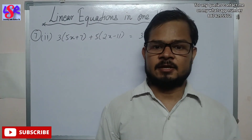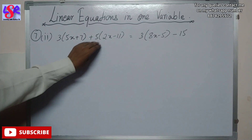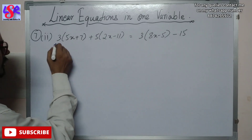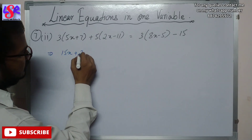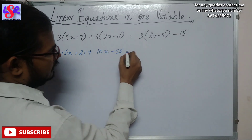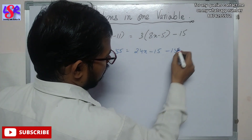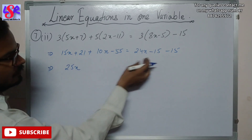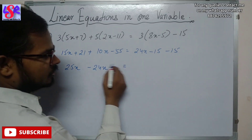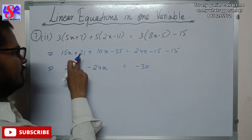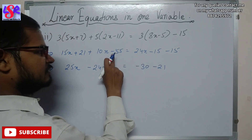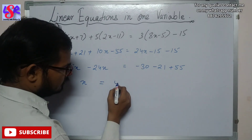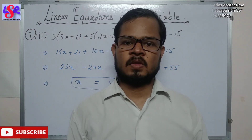Now question number 7, second part: 3 into 5x plus 7 plus 5 into 2x minus 11 equals to 3 into 8x minus 5 minus 15. Opening brackets: 15x plus 21 plus 10x minus 55 equals to 24x minus 15 minus 15. Rearranging: 25x minus 24x equals to minus 30 minus 21 plus 55. Solving, x equals to 4 as answer. That's all in this video, thank you.